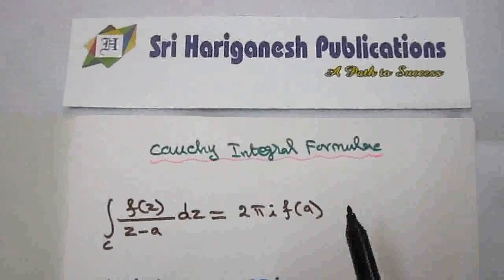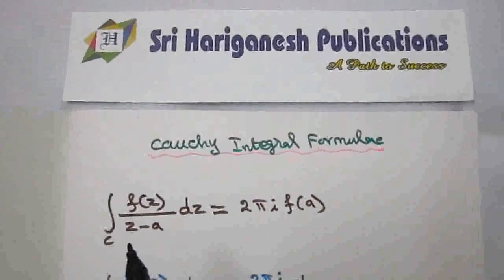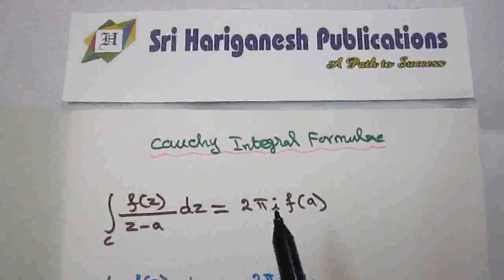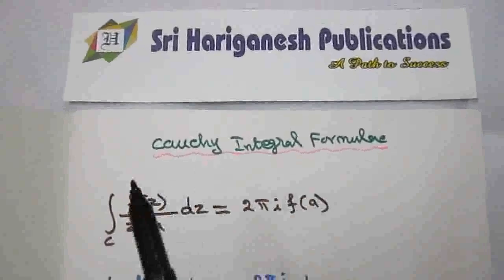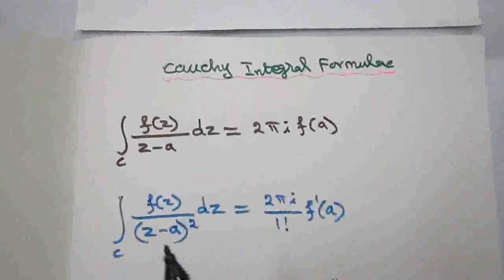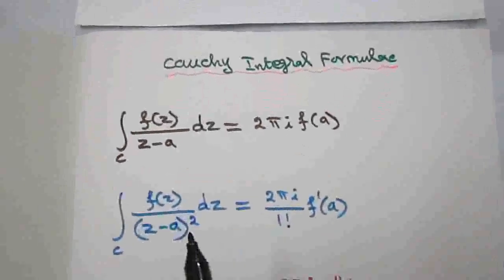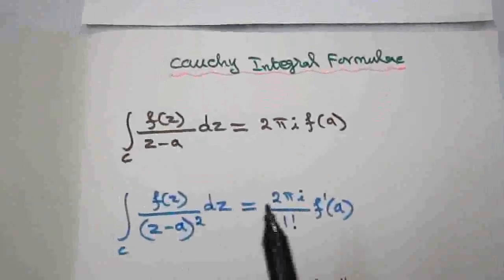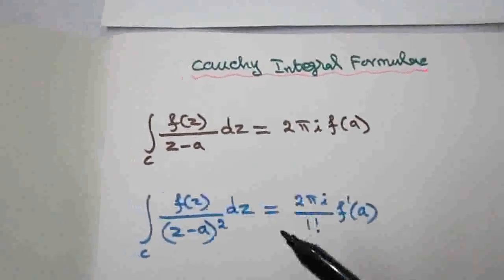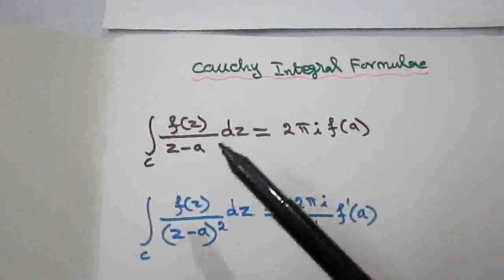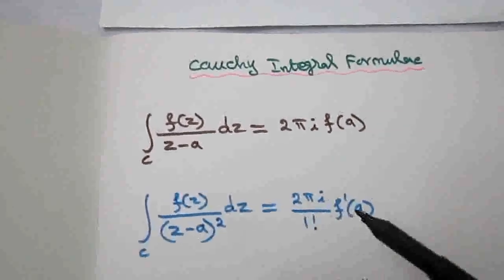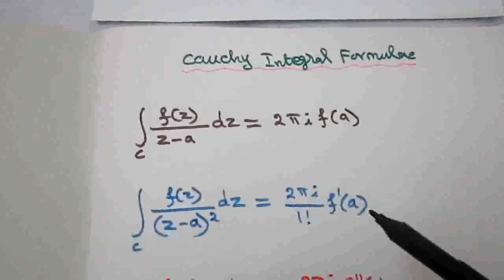The Cauchy integral formula states: integral over C of f(z) / (z - a) dz = 2πi · f(a). Another form: integral over C of f(z) / (z - a)² dz = 2πi · (1/1!) · f'(a). Notice the difference: denominator power 1 means no derivative; denominator power 2 means we apply one derivative. This is the Cauchy integral formula for derivatives.